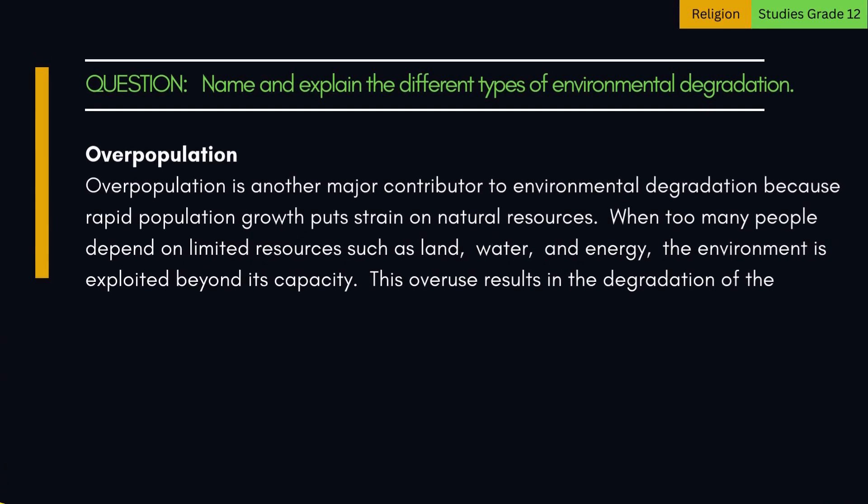4. Overpopulation. Overpopulation is another major contributor to environmental degradation because rapid population growth puts strain on natural resources. When too many people depend on limited resources such as land, water, and energy, the environment is exploited beyond its capacity.